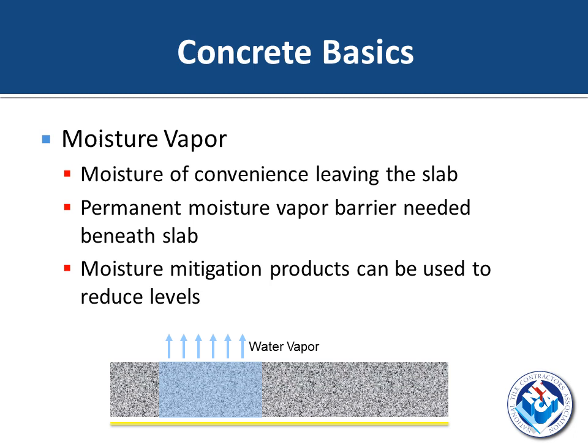With fast-track construction becoming more and more common, the adequate curing time — the rule of thumb of 28 days per inch — is not always allowed in order to meet deadlines, leaving high moisture content in the slab. Fortunately, moisture mitigation products can reduce these levels to acceptable levels. This picture here is a cutaway of a concrete slab with the impermeable vapor barrier, the concrete slab, and the water vapor having to leave through the top.